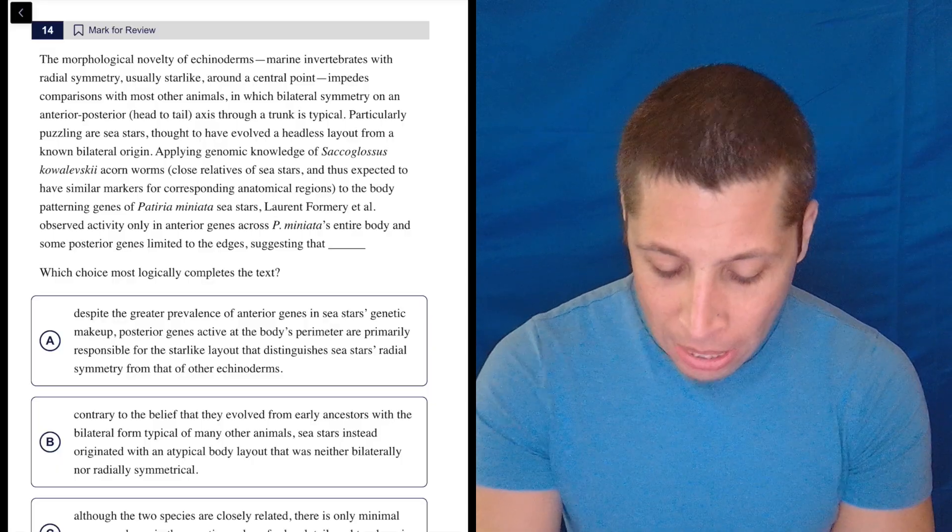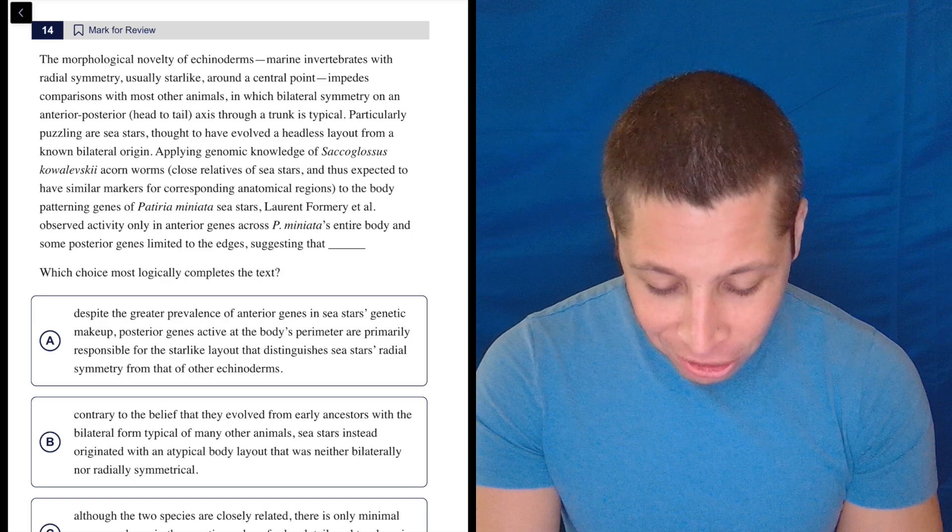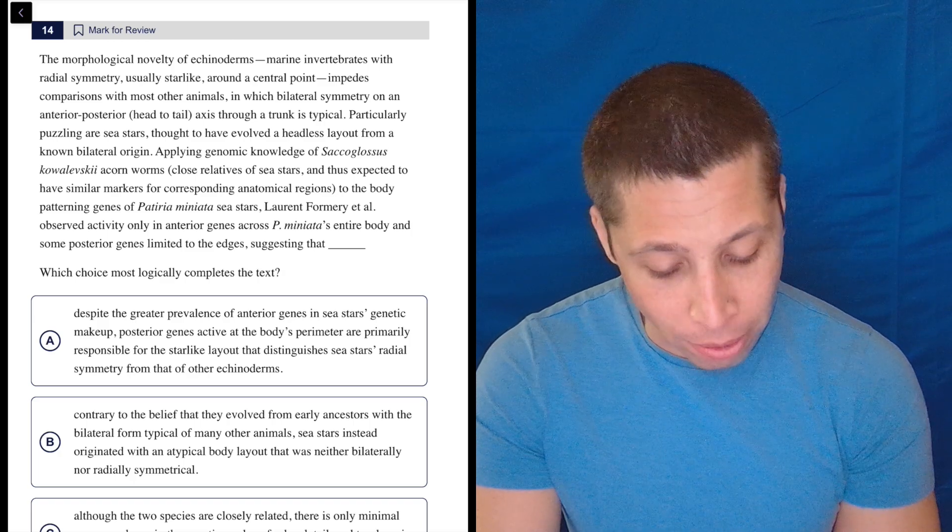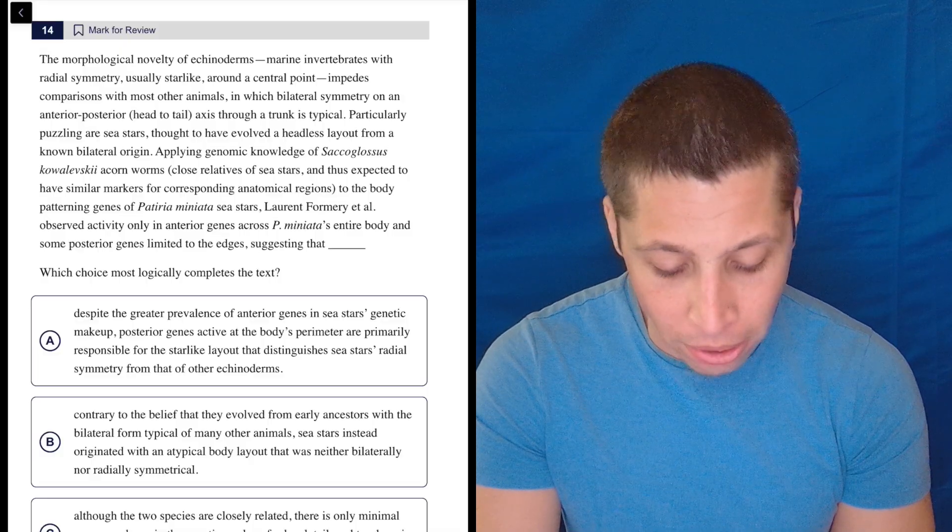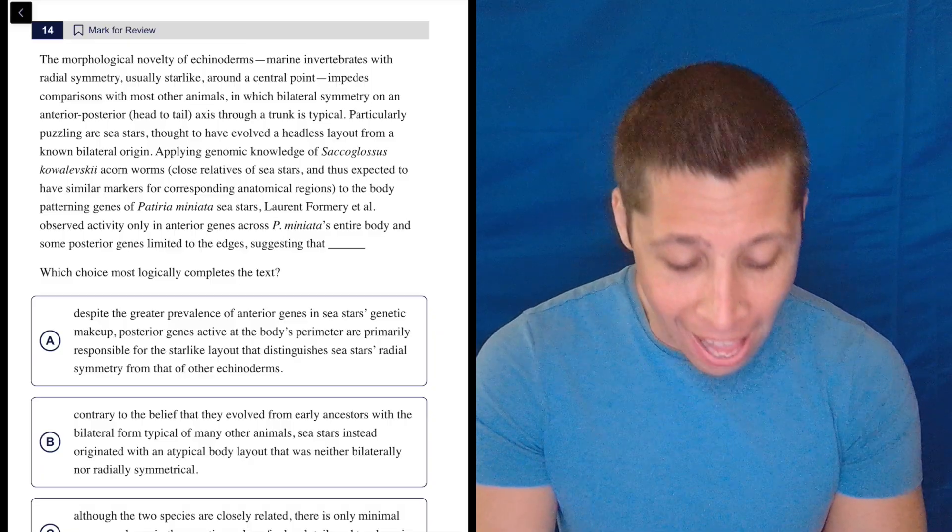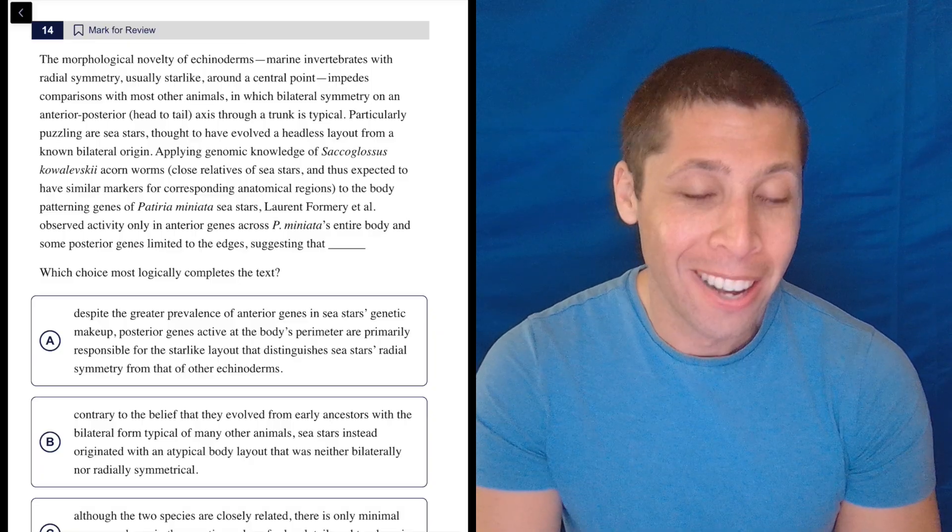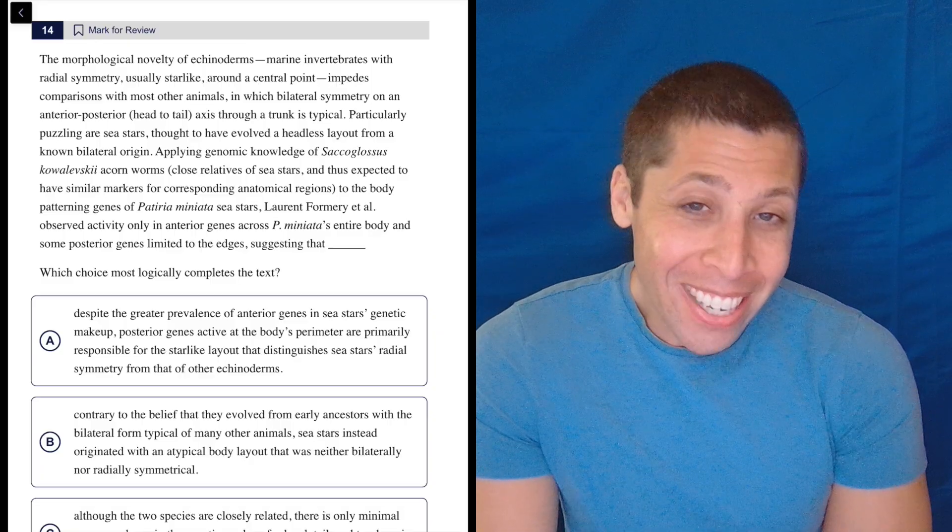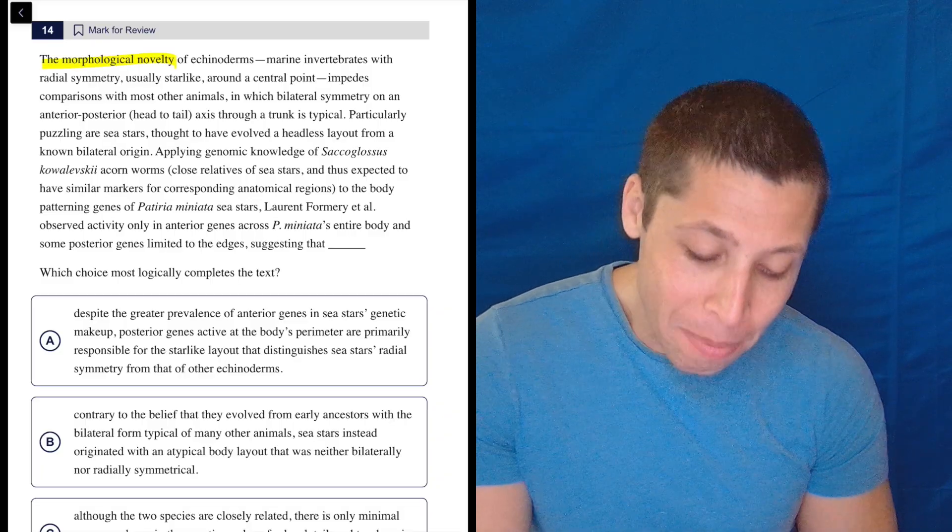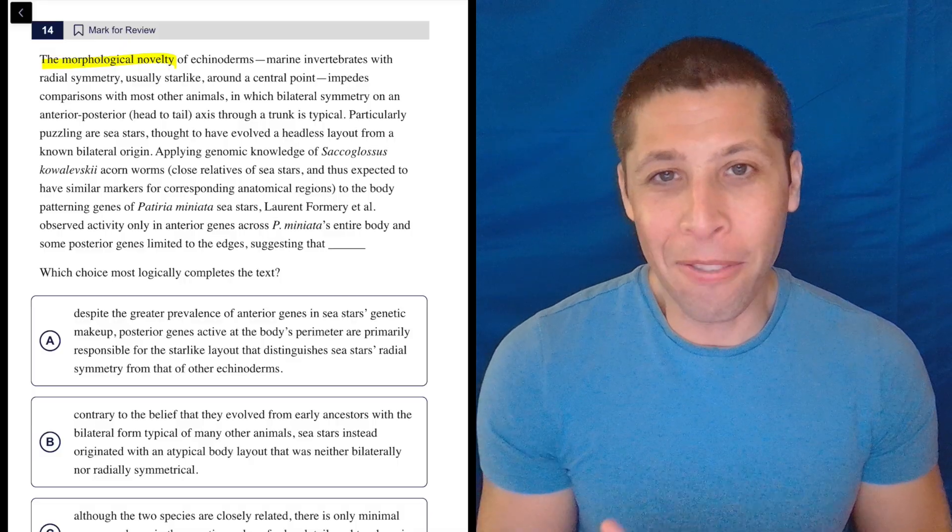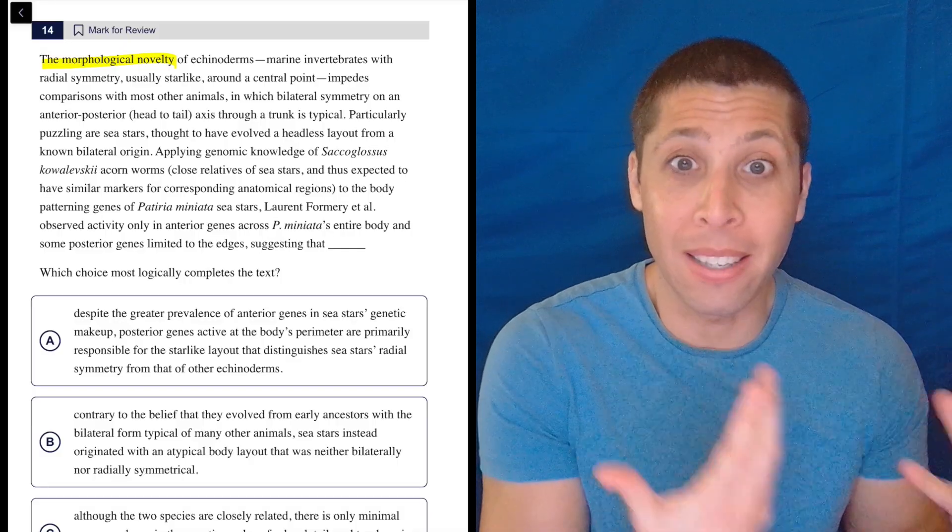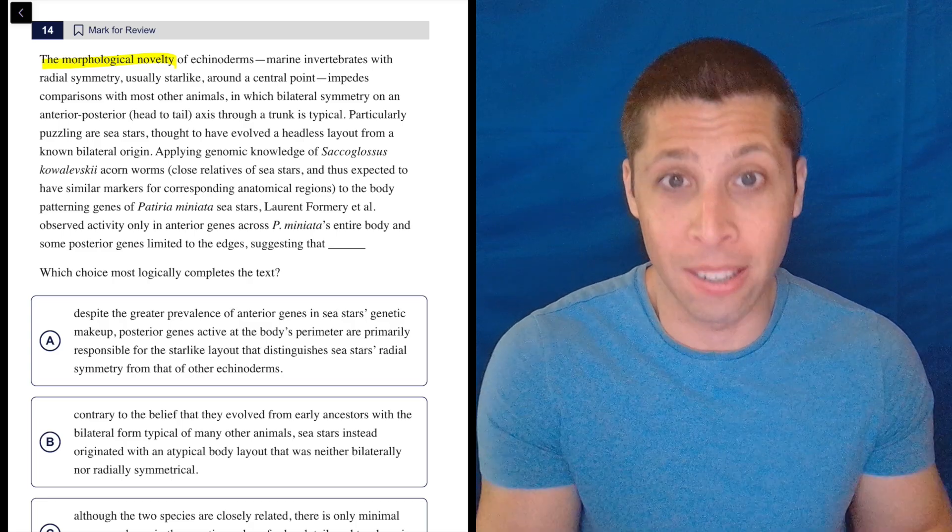You know, that first sentence is a doozy, though. The morphological novelty of echinoderms, marine invertebrates with radial symmetry, usually star-like around a central point, impedes comparisons with most other animals in which bilateral symmetry on an anterior posterior head to tail axis through a trunk is typical. For most of you, that is not English. But most of it is kind of obvious, right? So the morphological novelty means the weirdness of the way it looks. Morphology is the way it looks. Novelty, that's an important SAT word. Something is novel, it is new, it is weird, it is innovative, it is different.